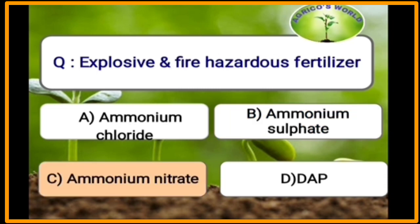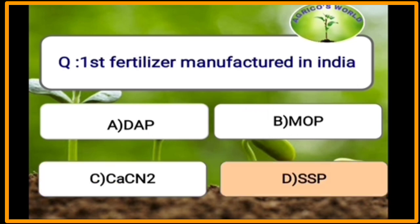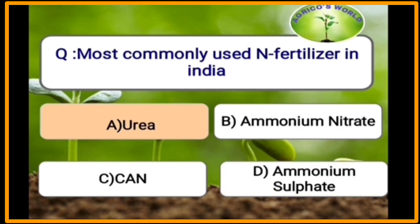Ammonium nitrate is an explosive and fire-hazardous fertilizer. The first fertilizer to be manufactured in India is SSP (single superphosphate). The most commonly used nitrogen fertilizer in India is urea, the most commonly used phosphorus fertilizer is DAP (diammonium phosphate), and the most commonly used potassium fertilizer is MOP (muriate of potassium, i.e., KCl).